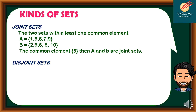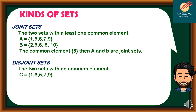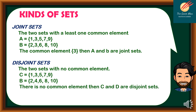On the other hand, disjoint sets are sets with no common element. For example, C = {1, 3, 5, 7, 9} and B = {2, 4, 6, 8, 10}. Since there is no common element, we call these disjoint sets.